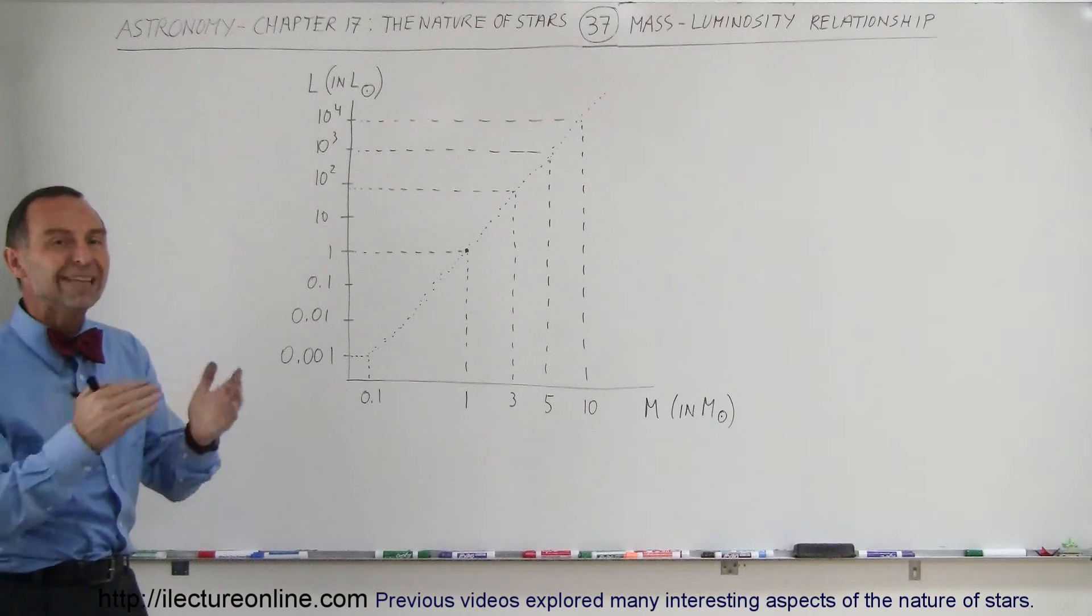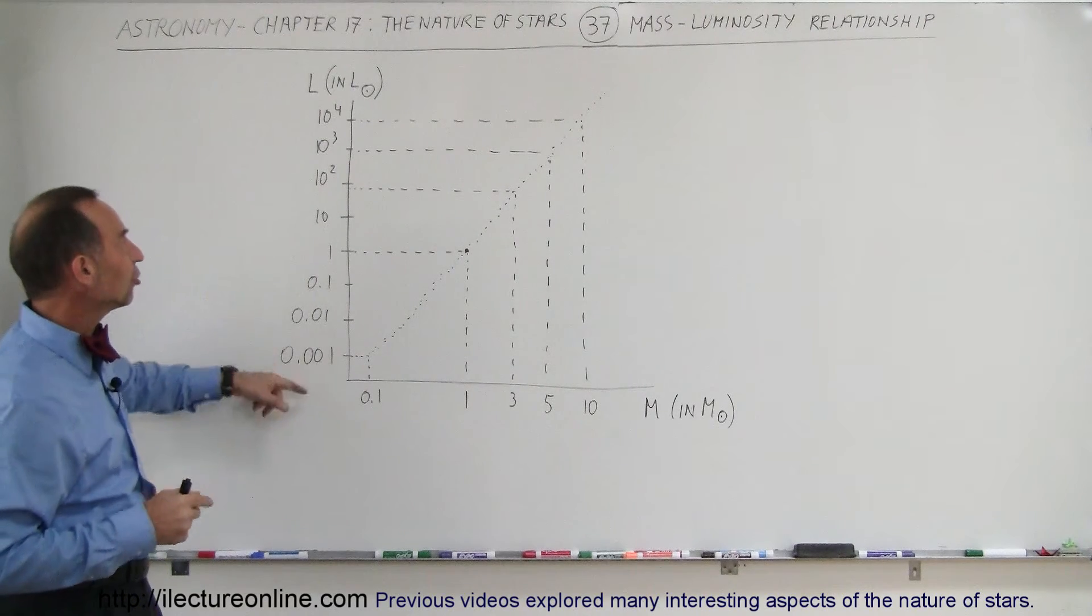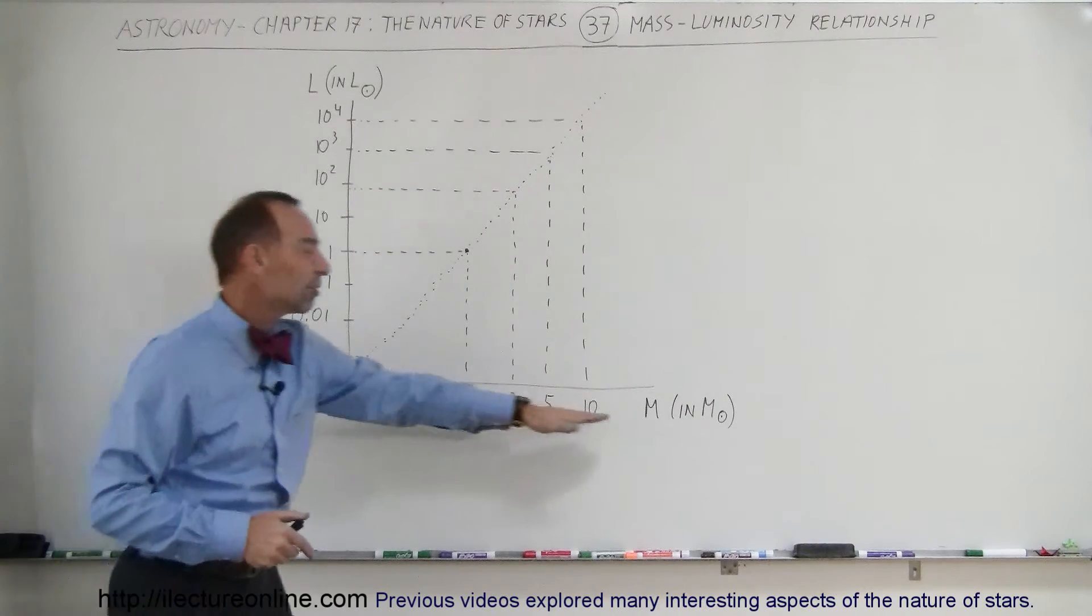So this is relationship to main sequence stars, and we find that if we draw the relationship between the luminosity of the stars and the mass of stars...